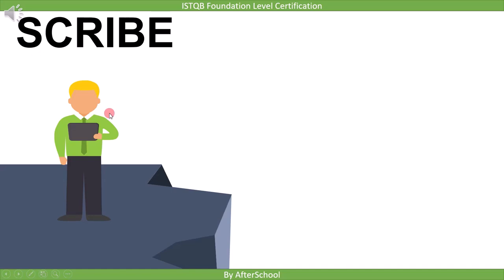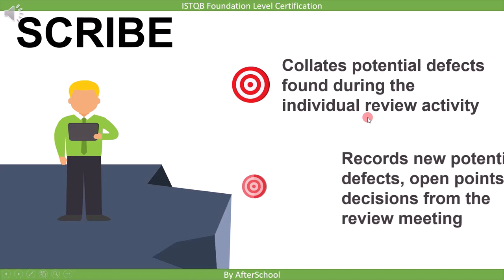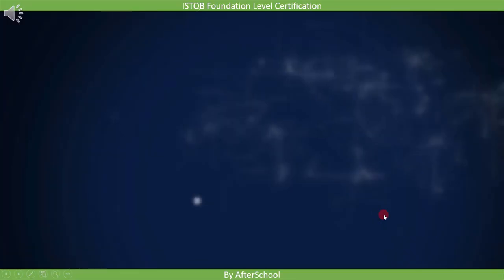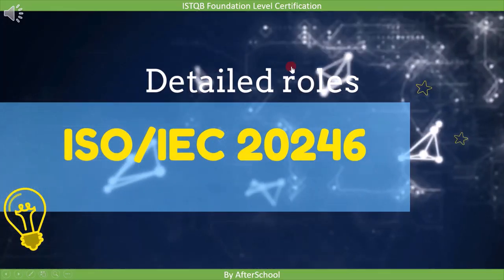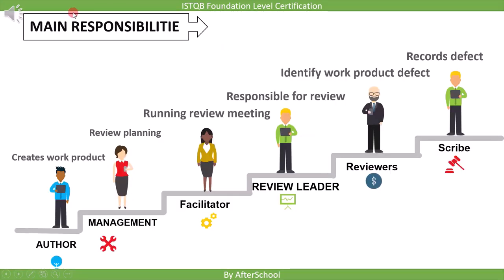The scribe collates potential defects found during individual review activity and records new potential defects, open points, and decisions from the review meeting. For more detail on roles and responsibilities, refer to ISO/IEC 20246. In summary: author creates work product; management plans review; facilitator runs review meeting; review leader is responsible for review overall; reviewer identifies defects; and scribe records defects.